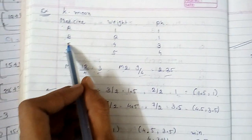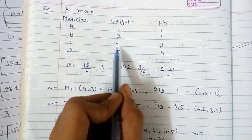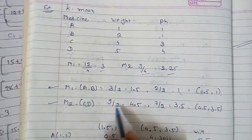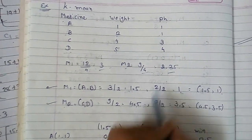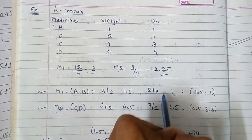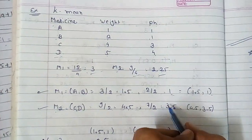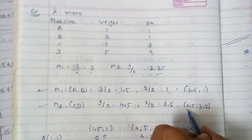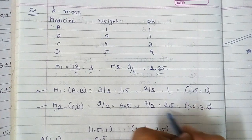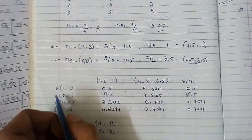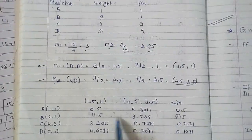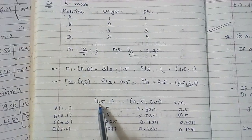Now find out m2 for C and D. To find out C and D: 5 plus 4 divided by 2, so that is 9 divided by 2, you will get 4.5. And 3 plus 4 divided by 2, so you will get 3.5. That is your m2 for C and D.